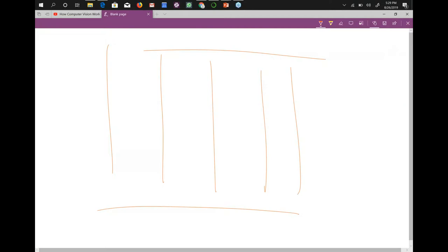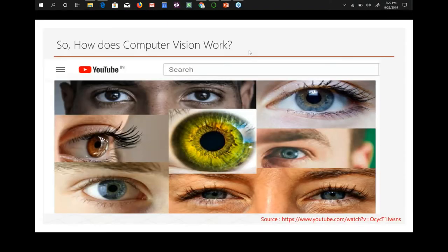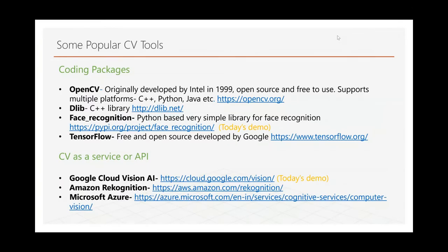Now I'll draw your attention to the tools and techniques people use for computer vision. On screen you can see some of the most popular packages for CV in Python, C++, and Java — including OpenCV, DLib, and others. We will be leveraging a Python package called face_recognition. This package doesn't just do face detection to tell you whether something is a human face — it can also match whether this is a known or unknown person, whether this is an image of Barack Obama, and so on.